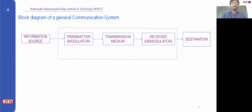The general block diagram of an optical communication system is shown in this slide, where your information source will be the first block. Information sources are the voice signal or the video signal that we produce — they contain the information. This information source is transmitted to a modulator, which is the device that performs modulation on the incoming information signal.